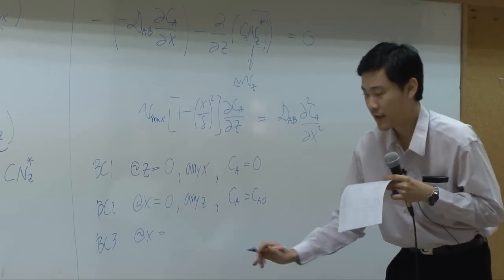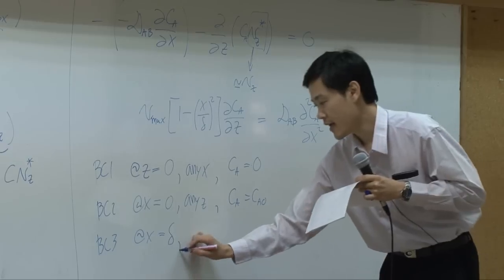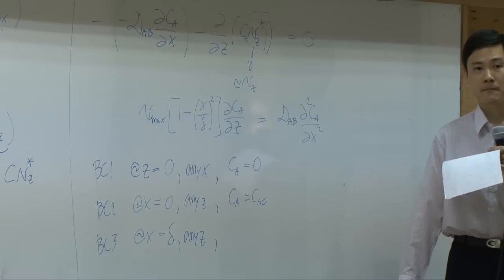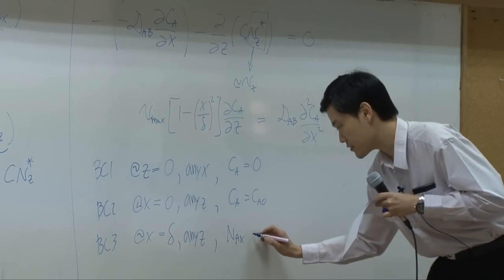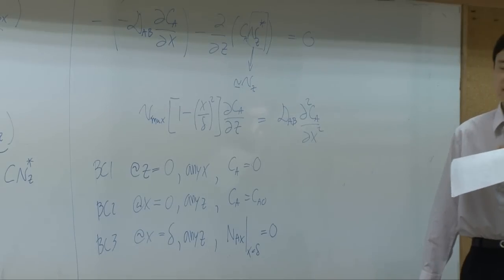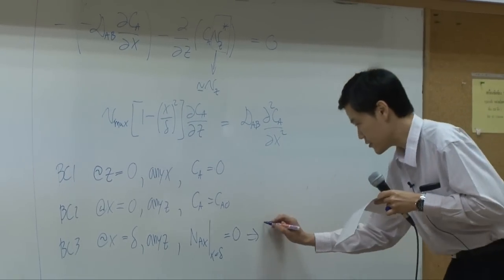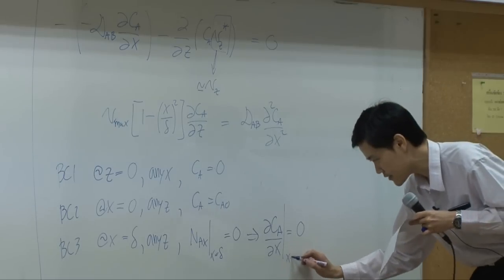The other boundary would come from at x equal to delta, which is our wall. So at x equal to delta, any z, what do we have? Flux is zero. Flux along x direction at x equal to delta is zero because our species cannot penetrate into the wall. This would be translated to dCA by dx equal to zero at x equal to delta.